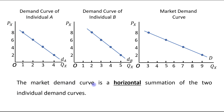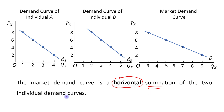The market demand curve is a horizontal summation of the two individual demand curves. When we say that the market demand curve is a horizontal summation of the two individual demand curves, what does that mean? I will explain this statement by taking an example.